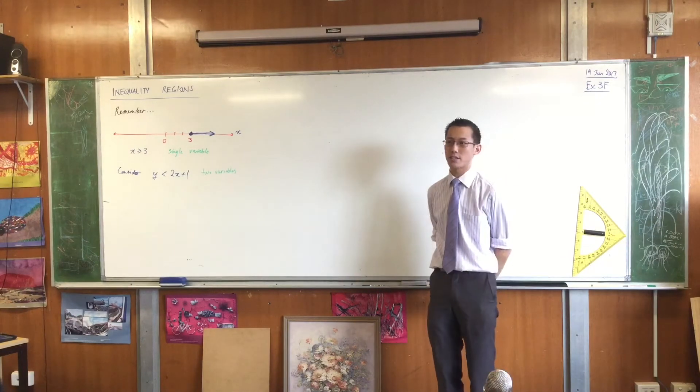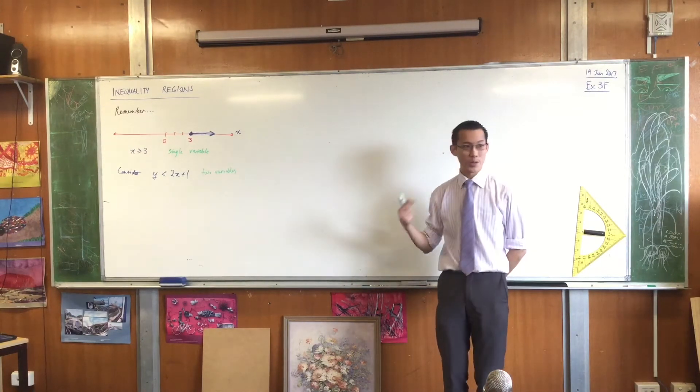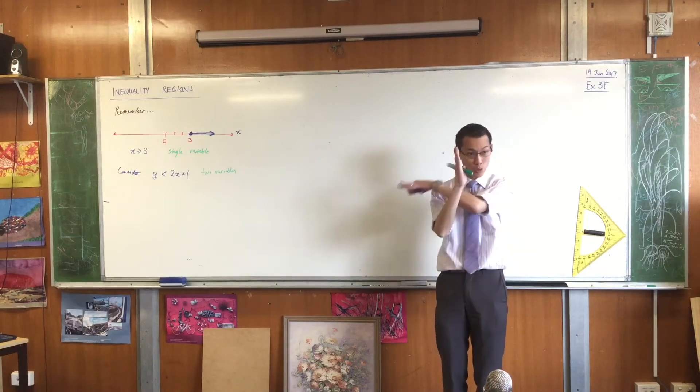If you've got a single variable, you just have a single axis. Well, if you've got two variables, a single axis is not going to cut it. So we're going to need, for two variables, two axes.